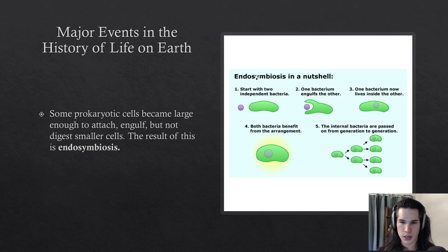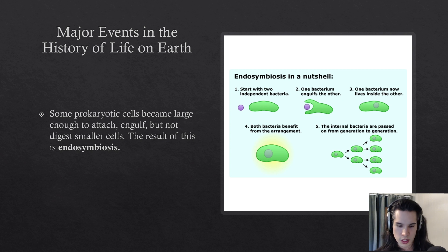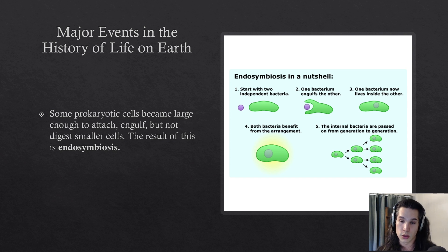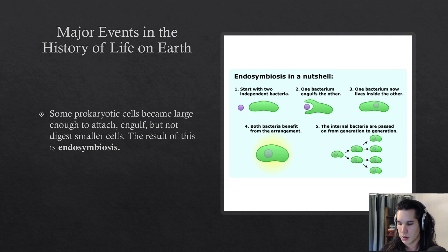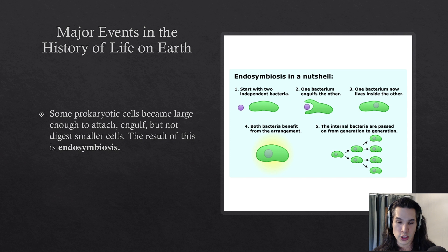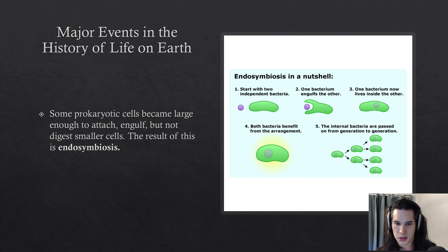Let's talk about the endosymbiotic theory. Way back, you have prokaryotes — some are photosynthesizing, some are consuming other prokaryotes to nourish themselves. As a general rule, if you're a larger prokaryote it's harder to eat you, and there are more smaller prokaryotes you could eat. If there was ever a mutation within the larger prokaryote that inhibited it from digesting certain organisms, that could go very wrong — that smaller organism could sit inside the larger one and eat it from the inside out.